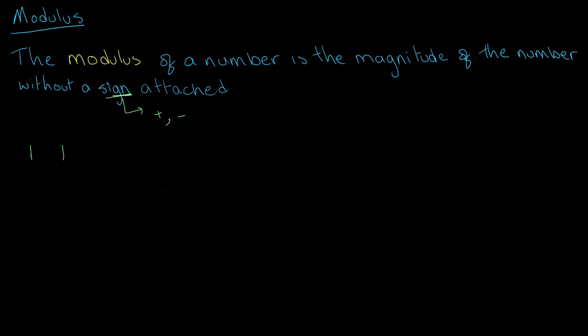For example, if you were to take the modulus of the number 4, we write two vertical lines on either side of it. The modulus of 4 is equal to 4, because the variable has no sign attached, so we simply rewrite it with no sign. If we take the modulus of negative 4, we also get 4, because we write the value inside the modulus without the negative sign attached.